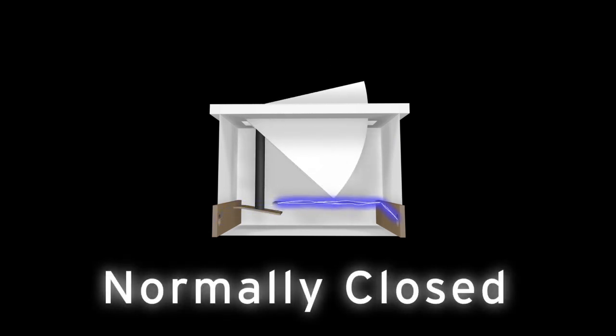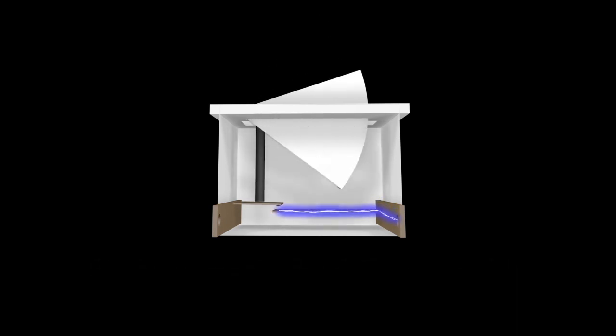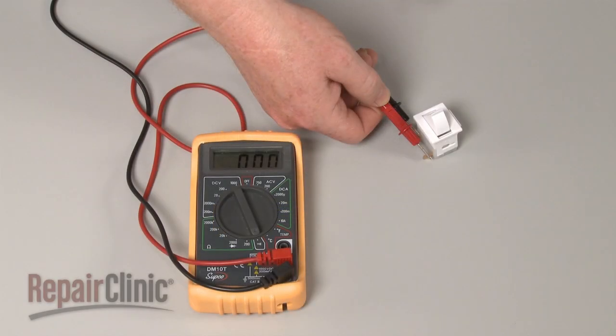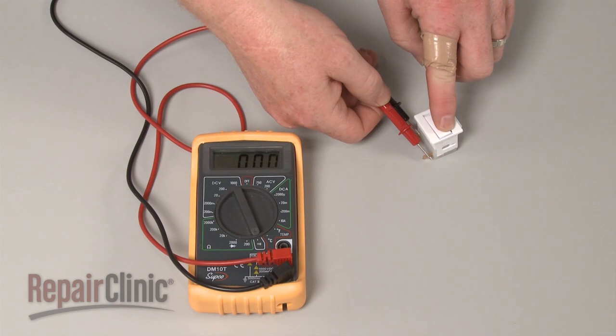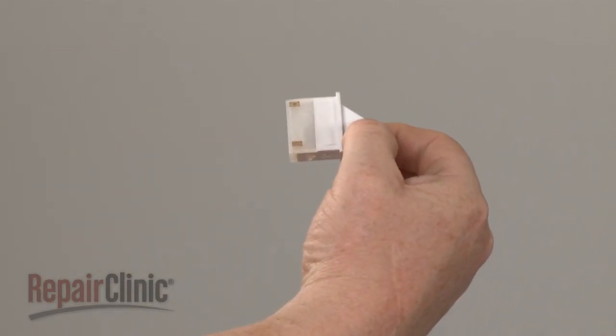Keep in mind that a normally closed switch should only have continuity before the switch has been actuated. Likewise, a normally open switch should only have continuity after the switch has been actuated. If a switch tests positive for continuity when it should not, it's likely that the switch has shorted closed and will need to be replaced.